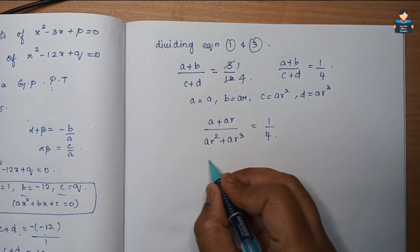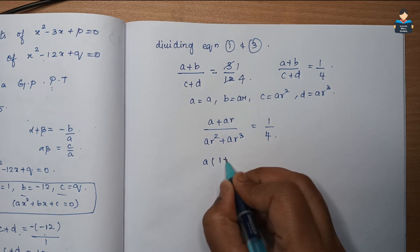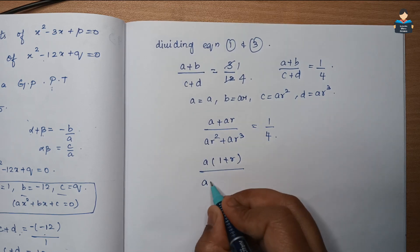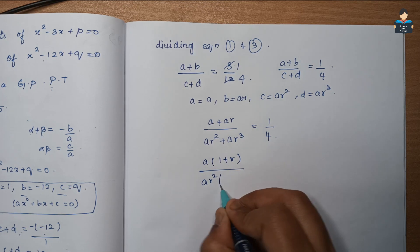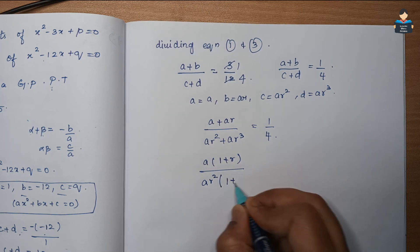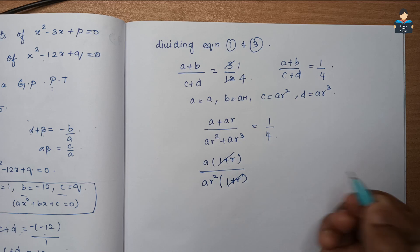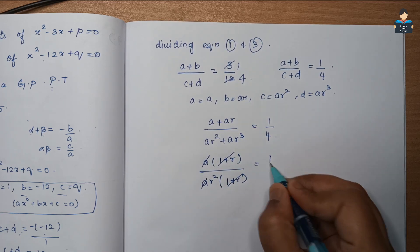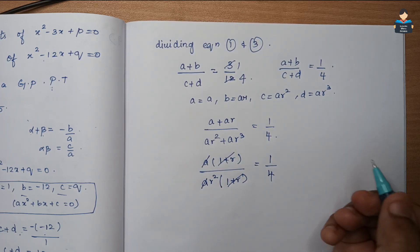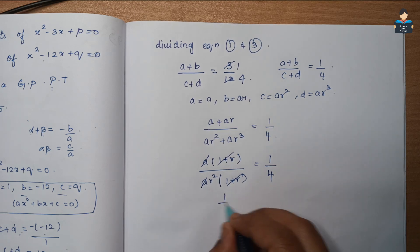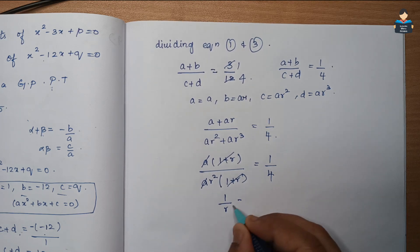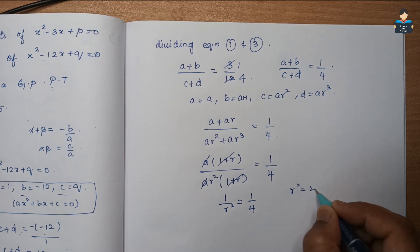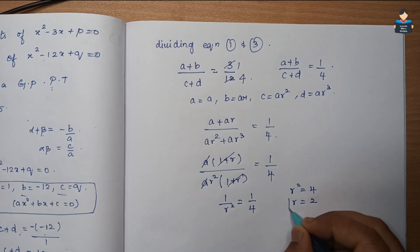After cancellation we have 1/r² = 1/4, therefore r² = 4, so r = 2.